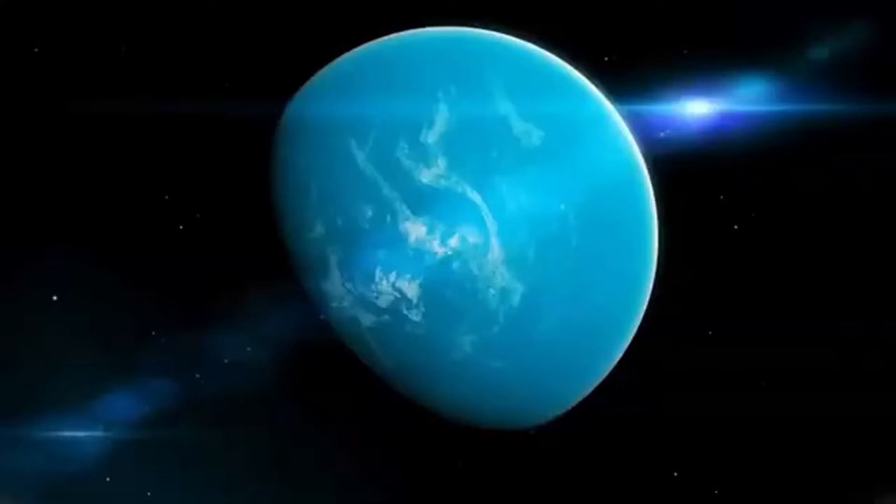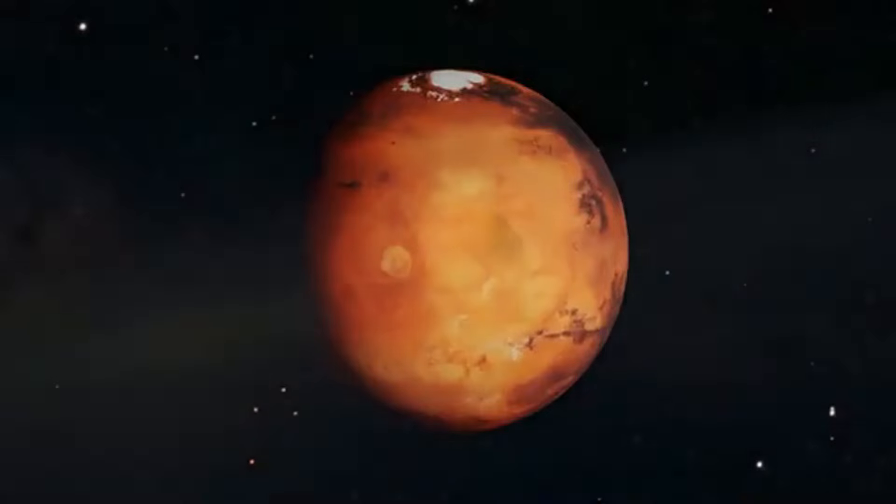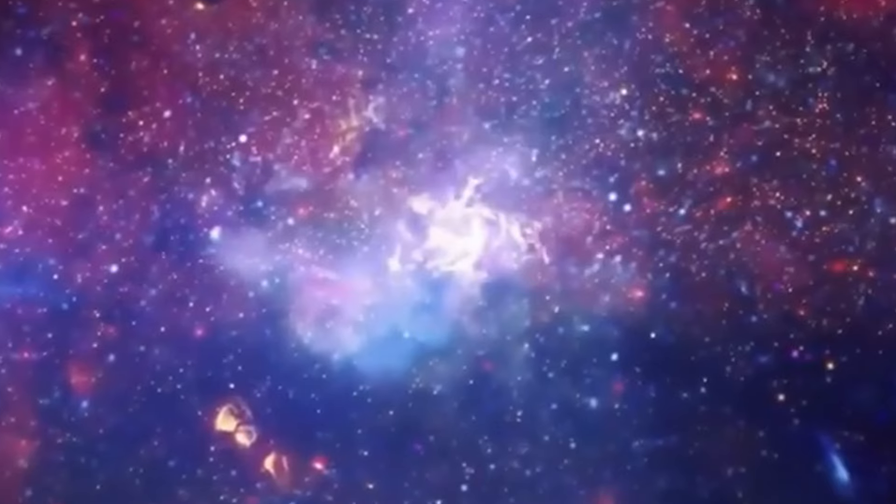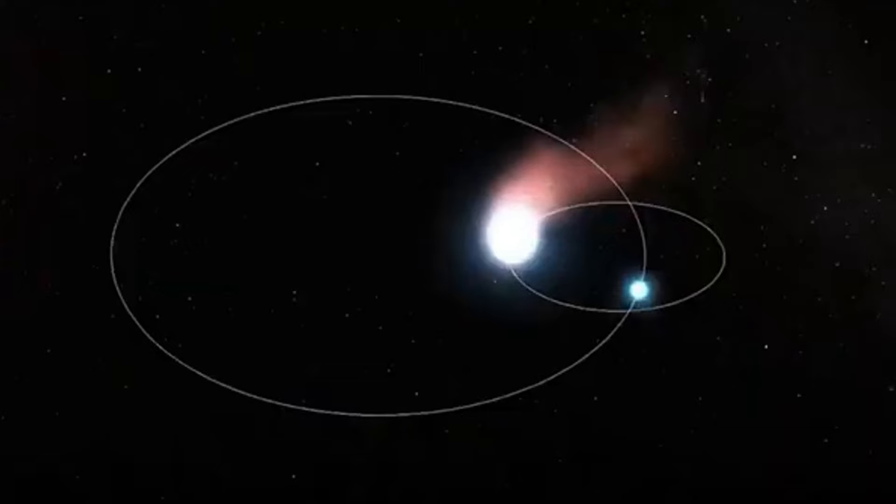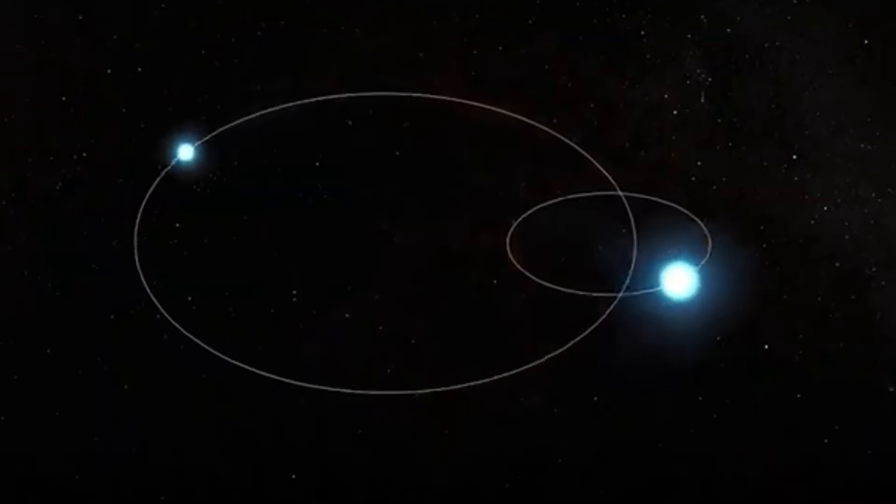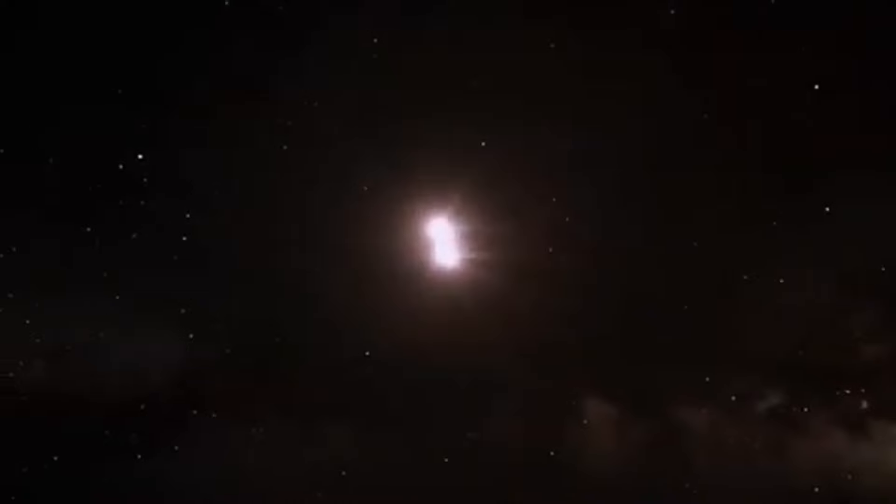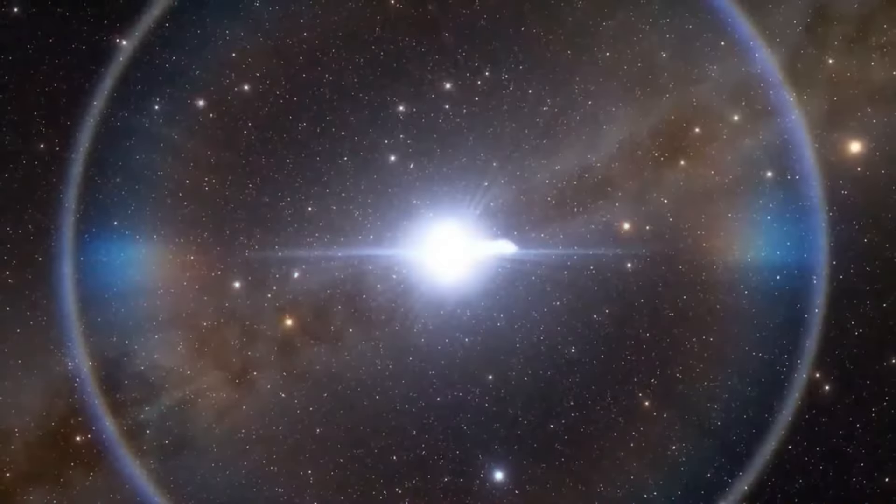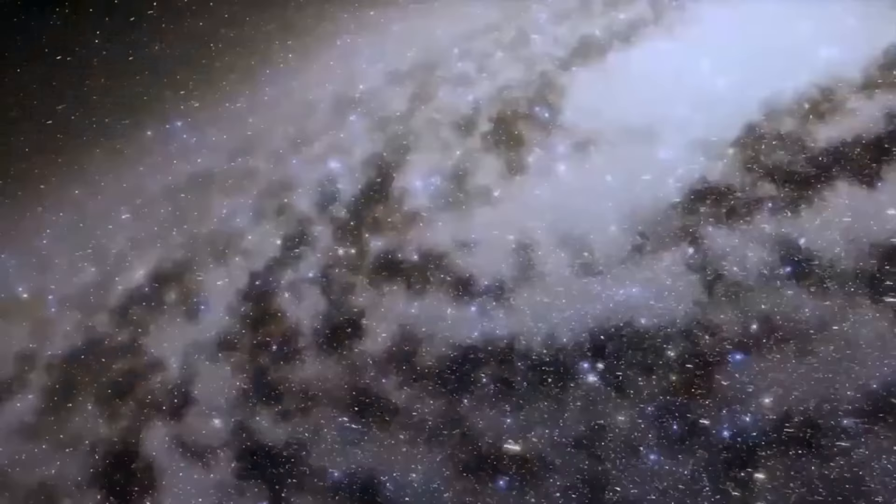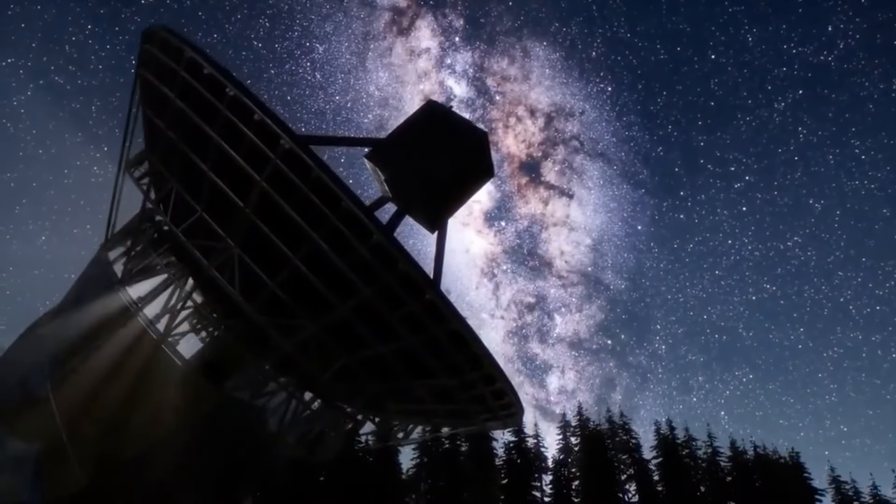Nicknamed Alpha Centauri c, this red dwarf, or M-type star, sits just 4.4 light-years away from its brighter companions, a distance roughly 13,000 times that between Earth and the Sun. It proudly wears the crown as the nearest star to our solar system, a title embedded in its name Proxima Centauri, meaning nearest star of Centaurus in Latin. This celestial wonder was unveiled to us in 1915 by the Scottish astronomer Robert Thorburn Ayton-Innes.